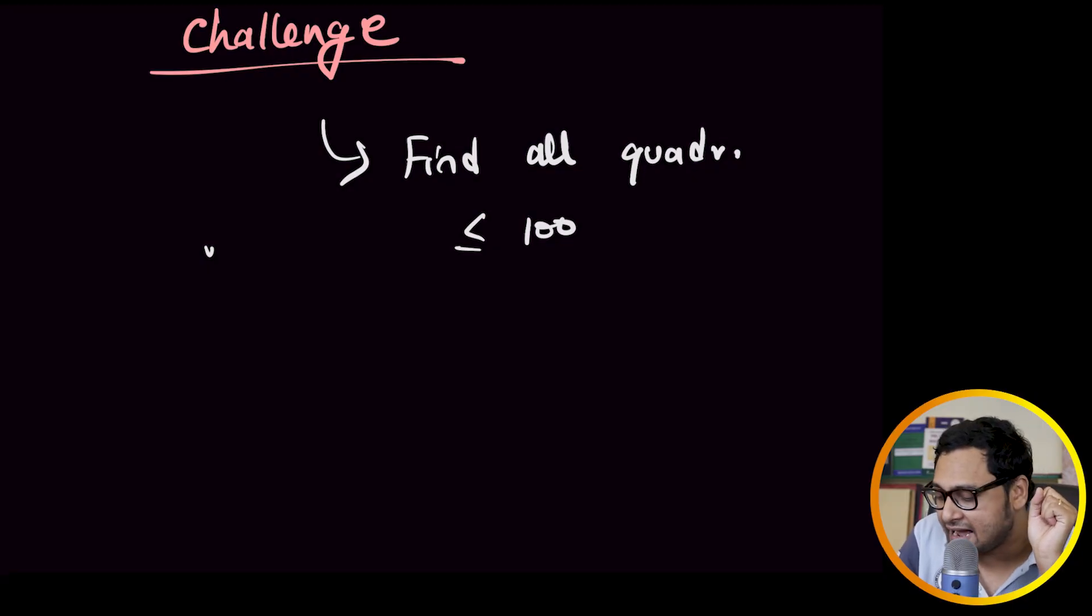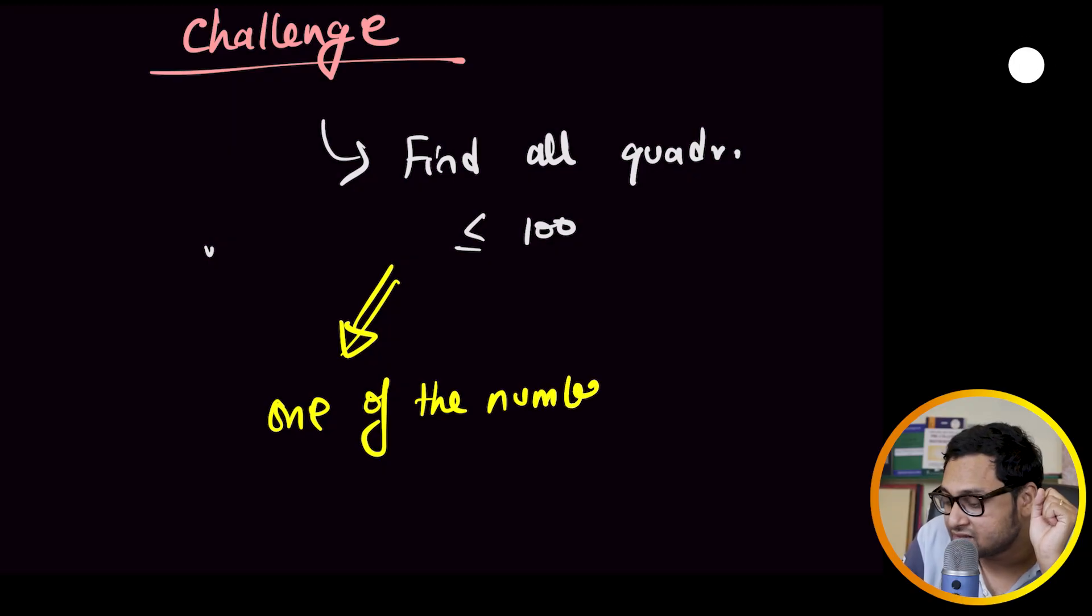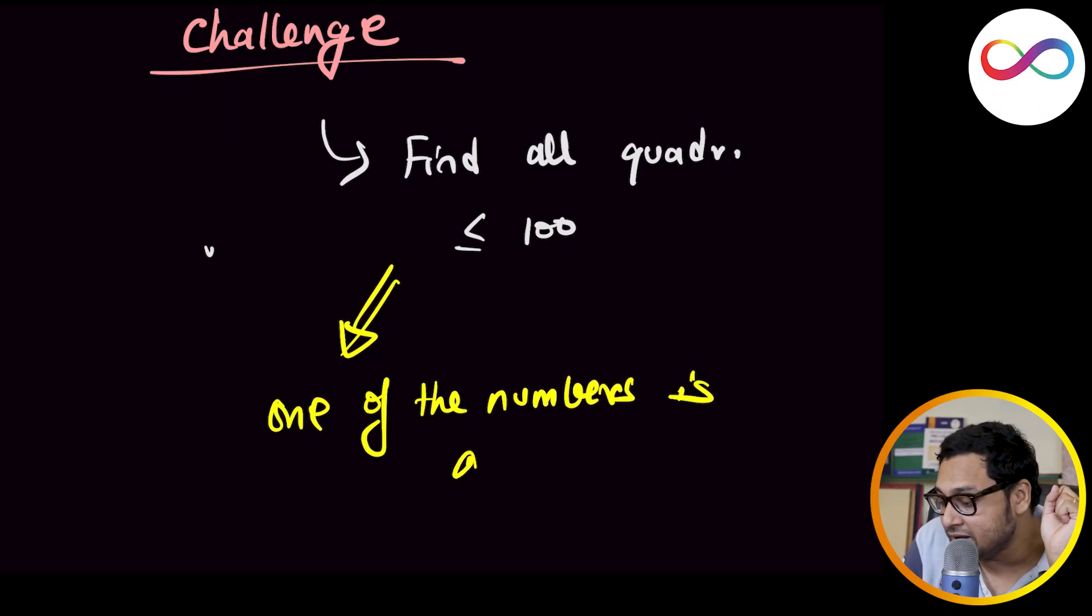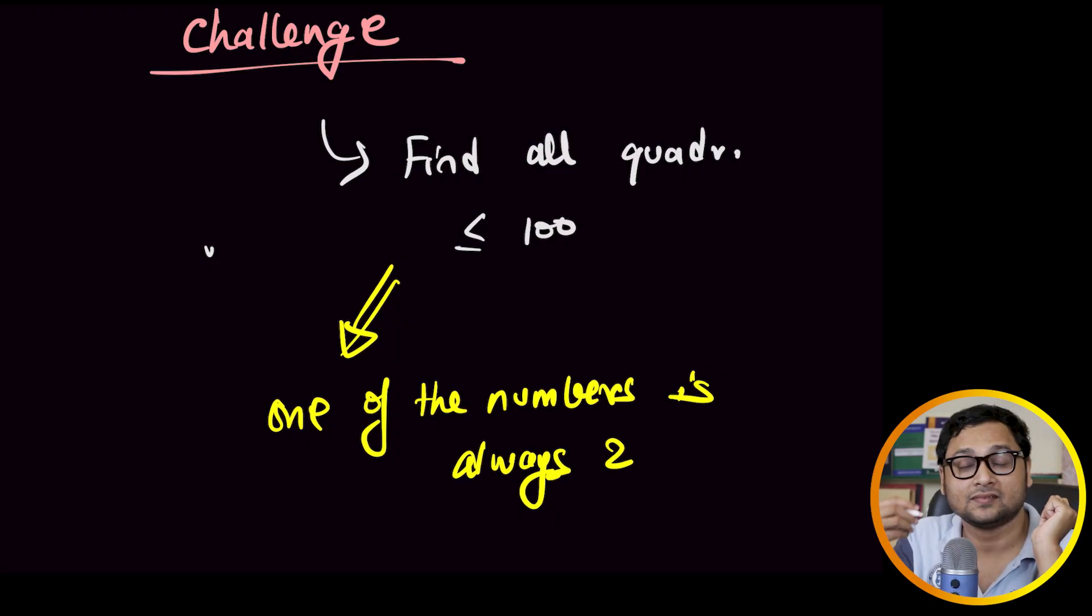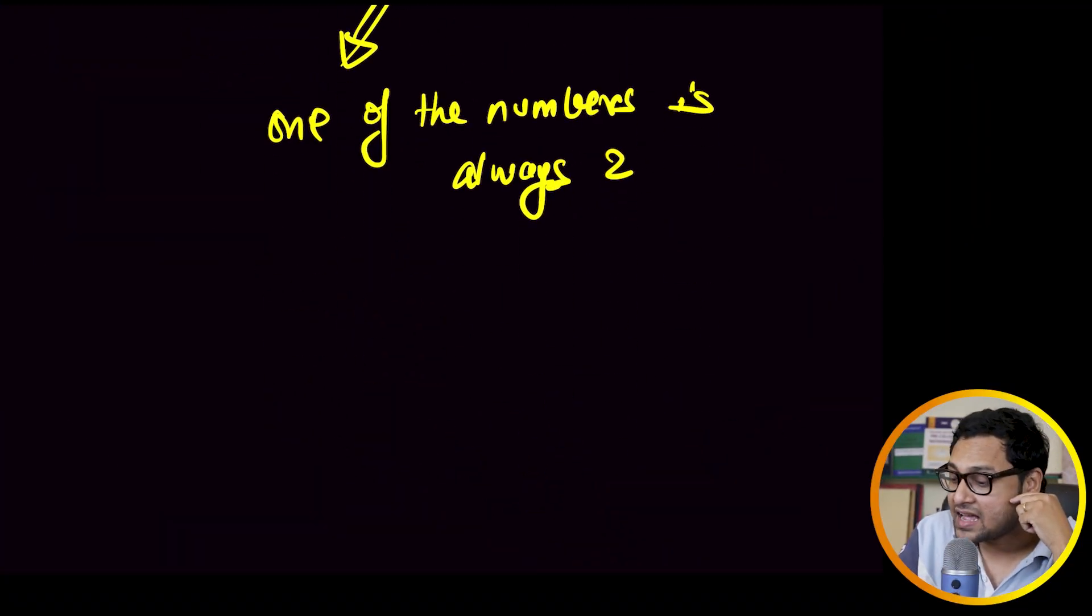You will notice that one of the numbers, one of the numbers is always two. This is crazy because you just found it computationally. You can also do this using a computer. This is a hypothesis that you are discovering. You didn't know this earlier. You were just writing down examples. Now you're discovering hypothesis that one of the four prime numbers must be two. It's not proven. It's a claim. Now the question is, how do you prove it?